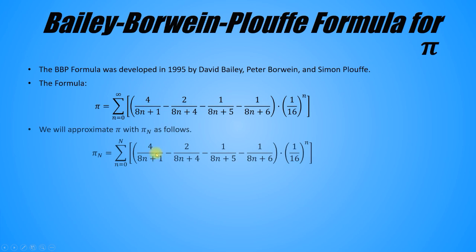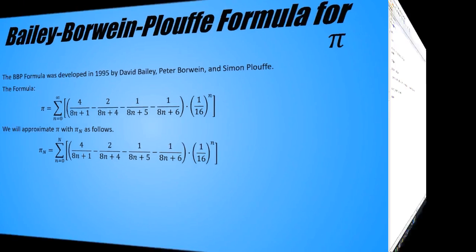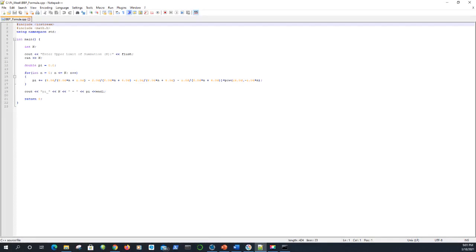Since we can't sum infinitely many terms, we'll cut the sum off at some number capital N. The larger N is, the more accurate the approximation will be. I'm not going to bother doing this by hand. I've written a C++ program that computes the BBP formula for a given value of N. Here the program asks for N, and here it computes the formula. Let's see how it performs.